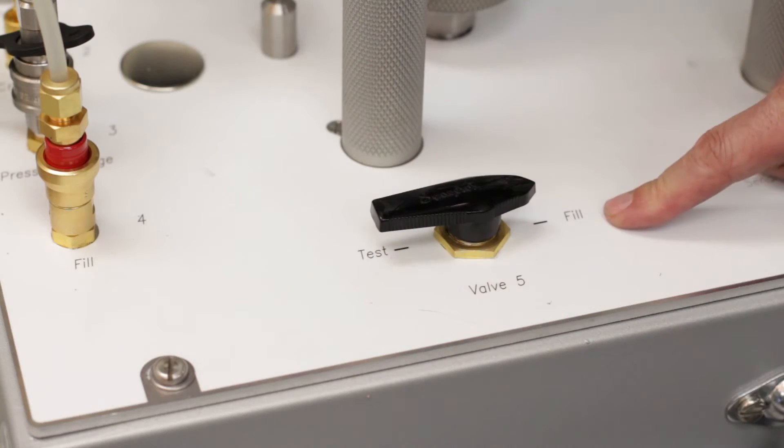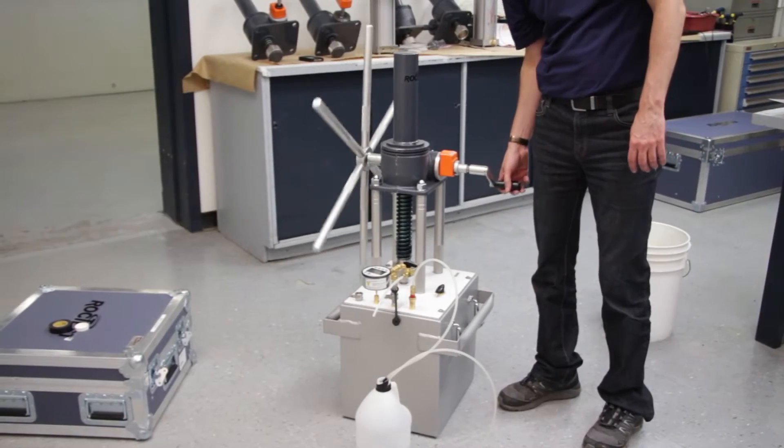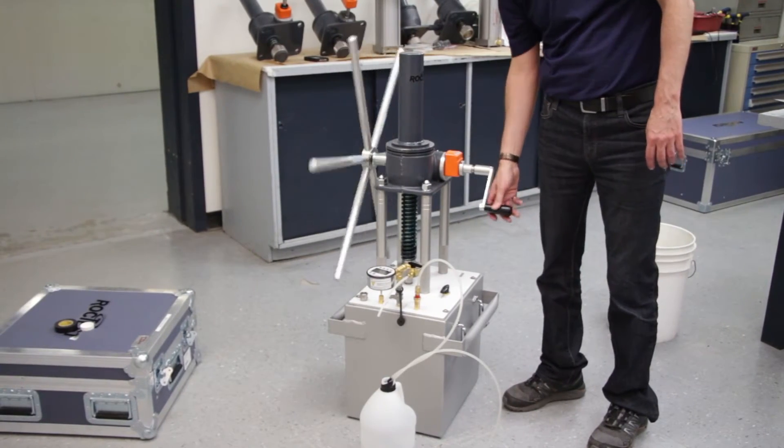Set the valve number five to fill. Bring the piston to zero cc by turning the crank handle counterclockwise. When fully lowered, wait 30 seconds before performing the saturation check.